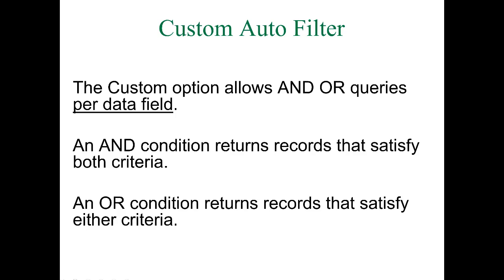An OR is a more expansive search than an AND query — only one of the two conditions needs to be satisfied. So in the last example, begins with M or ends with S: my name would come up, Mendez would come up even though it ends with Z, and a name like Jones would also come up because it ends with S even though it doesn't begin with M. You get more results with an OR search than with an AND search.